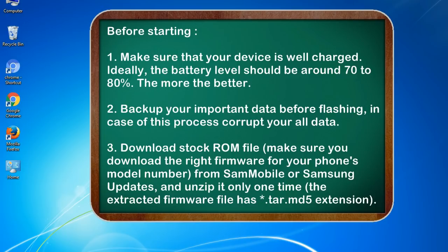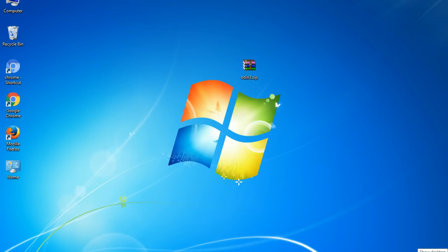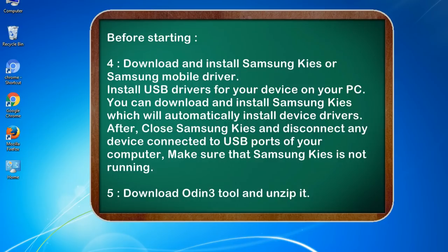3. Download the stock ROM file. Make sure you download the right firmware for your phone's model number from Sammobile or Samsung Updates, and unzip it only one time. The extracted firmware file has a *.tar.md5 extension.